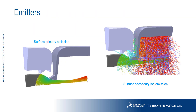Ions may be generated in Opera by the interaction of particles from a primary emitter with a surface on which a secondary emitter has been defined — these are among the simplest types of devices to simulate. Alternatively, the primary particle beam can interact with volume secondary emitters, generating multiple species. This is typical of the interaction of charged particles with volumes of gases.